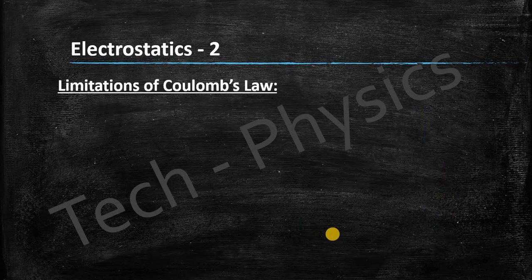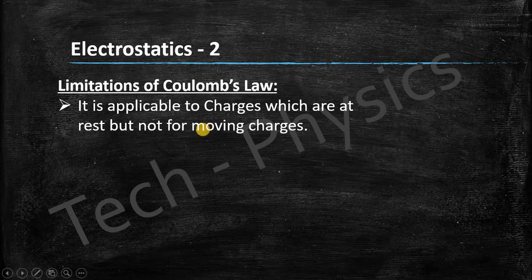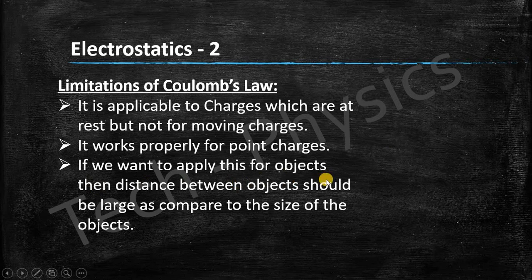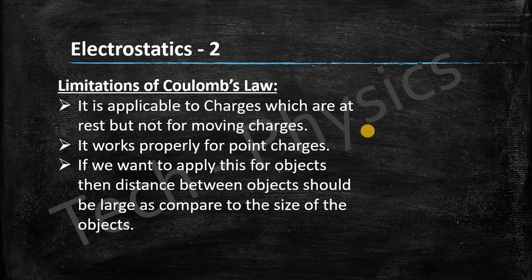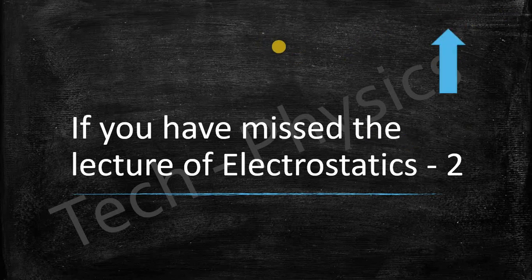The last topic was limitations of Coulomb's law. The first limitation is it is applicable only to charges which are at rest, not for moving charges. It works properly for point charges only; if you want to apply it to objects, the distance between them should be large compared to their size. If you missed the lecture on Electrostatics 2, you can go there — the link is in the description.